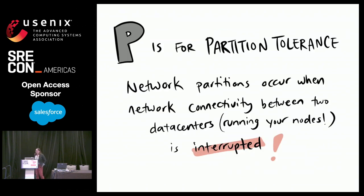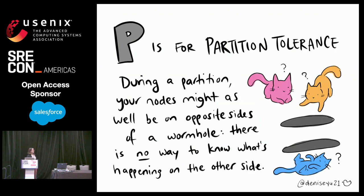P is for partition tolerance. A partition refers to a network partition — a loss of connectivity between two things that are supposed to be talking to each other. You might also hear it referred to as a net split or network fault. During a partition event, your nodes might as well be on opposite sides of a wormhole. They can't talk to each other, they have no visibility into what's happening on the other side, you don't know if the other side is operational or continuing to respond to health checks.